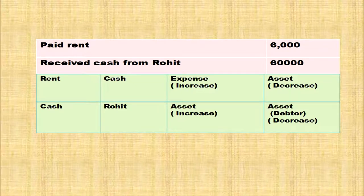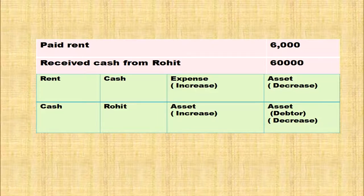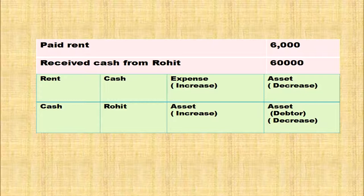Received cash from Rohit. Cash being an asset is debited. Rohit is the debtor and it is decreasing — asset is decreasing, so it is credited. The rule for asset account: increase in asset is debited and decrease in asset is credited. So, cash account debit to Rohit.